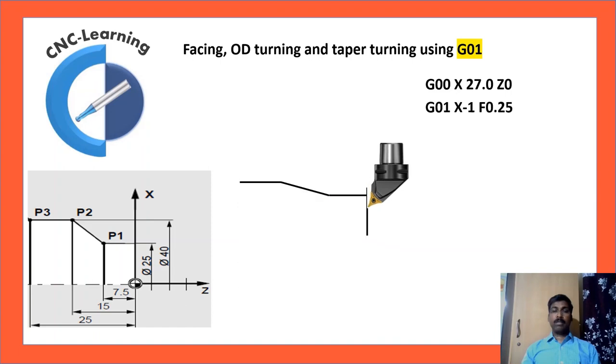So G01, X1, F0.2. F is the feed rate. X1 is given because if you give X0 because of the tool radius, finally you will get a small pip in the center of the part. So to avoid that, to compensate that, X1 is given for facing.